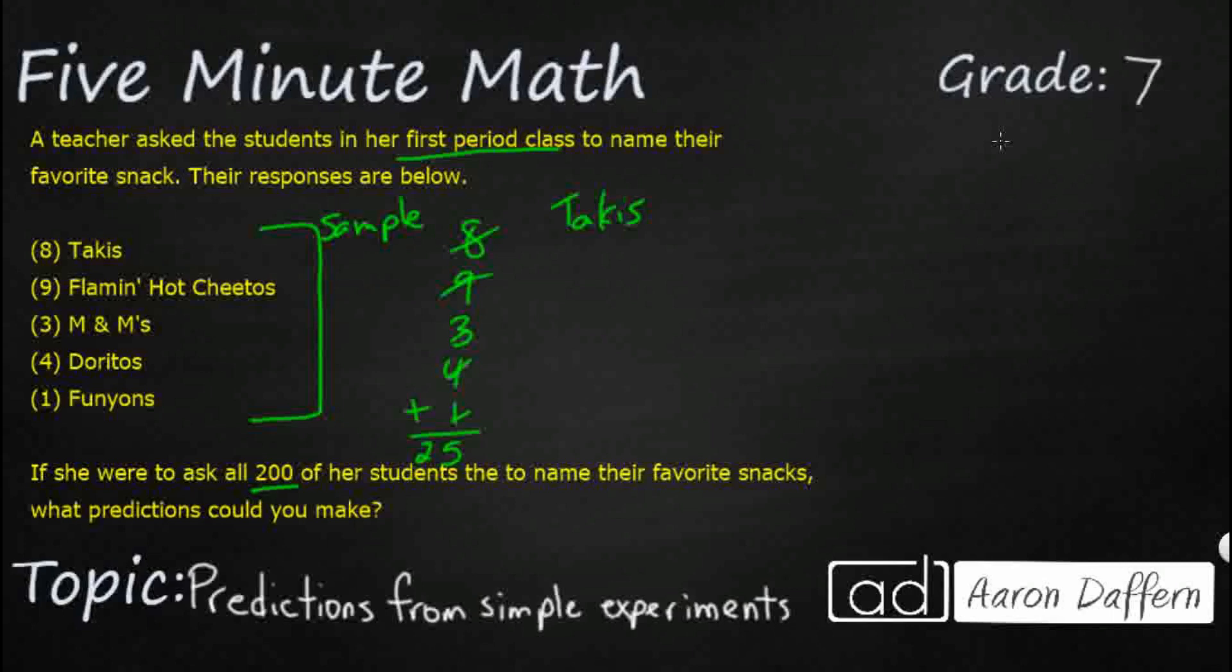Out of our small sample we know that we had 8 students choose Takis out of our total 25. So let's just make that into our proportion here. So we have a total of 200 and then let's just make the number x going to be for our number of total Takis. Well, we could always do a little bit of cross multiplication, right?